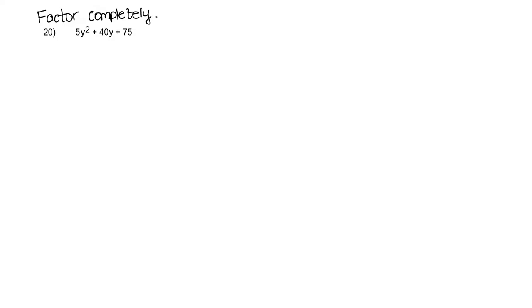We're going to factor completely 5y squared plus 40y plus 75. We have three terms here, which means we have a trinomial. In order to factor trinomials there are a couple of different methods you can take, so we're going to go over three different methods to solve this problem.